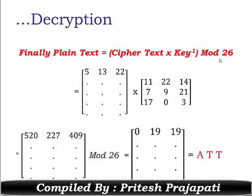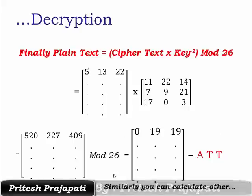Finally, plaintext equals ciphertext into key inverse mod 26. The calculated ciphertext values C(1,1), C(1,2), C(1,3) are 5, 13, and 22. Perform normal matrix multiplication: this row times this column gives 5 times 20 for the first value, 227 for the second, and 409 for the third. Applying mod 26 gives 0, 19, and 19 — that is A, T, and T — your original plaintext. Similarly, you can calculate other values.